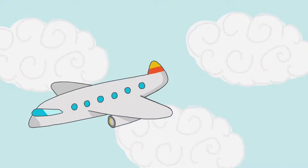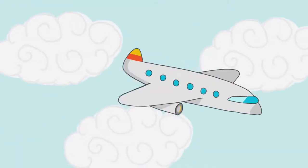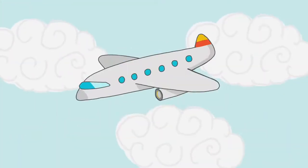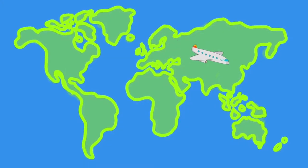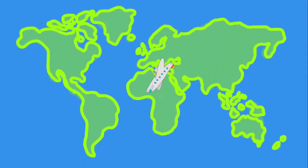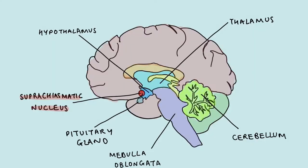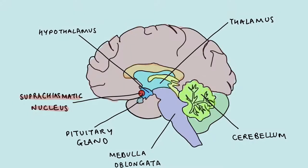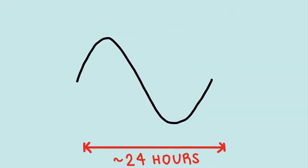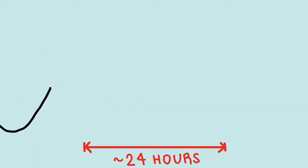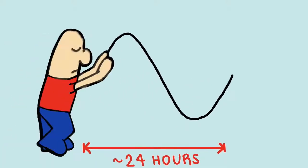The phrase jet lag arose when a journalist described jet travel as so fast that it leaves your body rhythms behind. This is just what happens when you travel to a different time zone. So how can the suprachiasmatic nucleus adapt to the new time zone? Using different external signals, the circadian rhythm can be reset so it fits the local time of the environment.